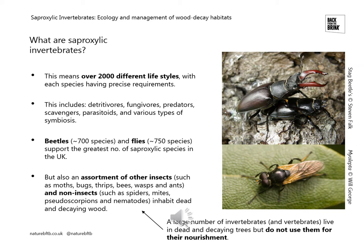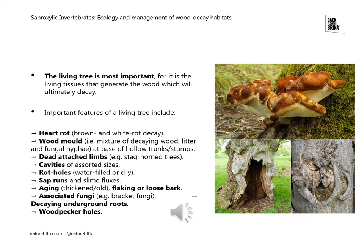It's also important to note that a large number of other invertebrates and vertebrates like bats and birds live in dead and decaying trees but don't necessarily use them for their own nourishment in the same way as saproxylic species would. The living tree is really important to saproxylic invertebrates, for it is the living tissues of these trees that generate the wood which ultimately decays and creates those habitats that saproxylic species need.